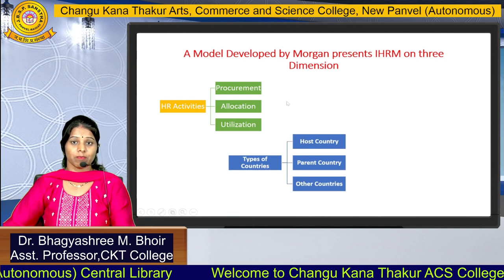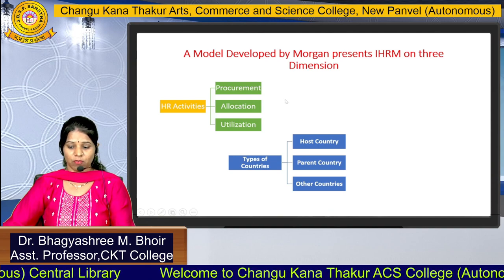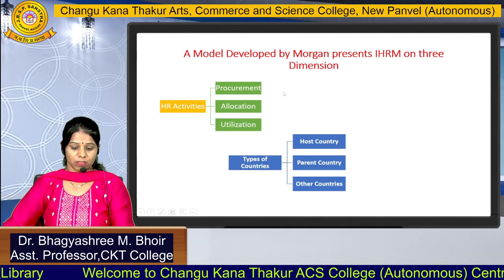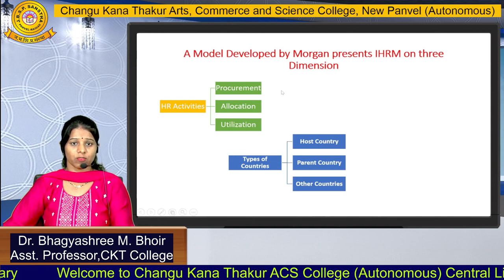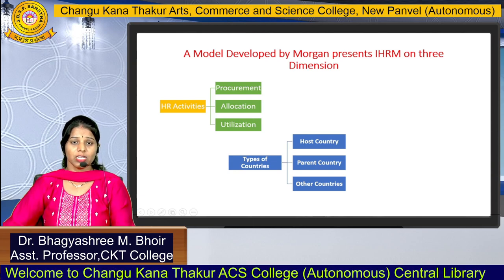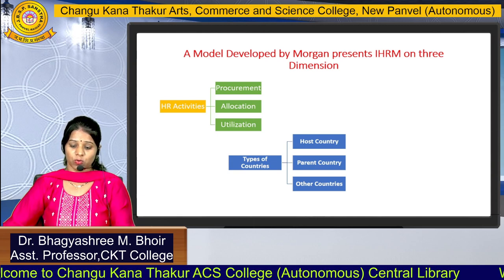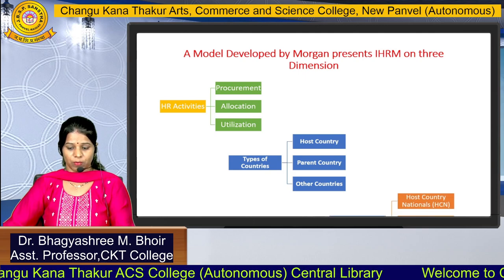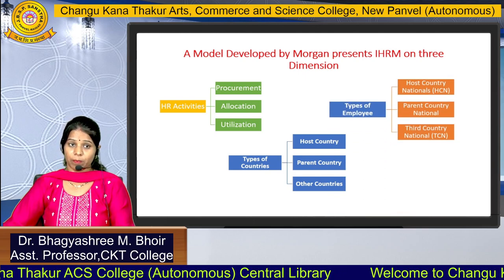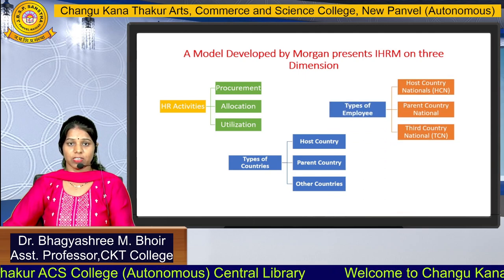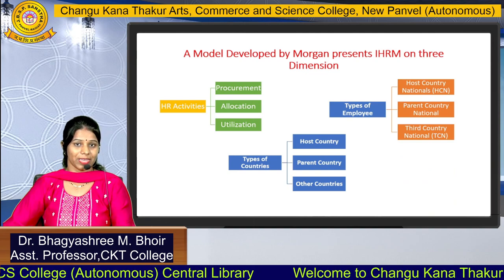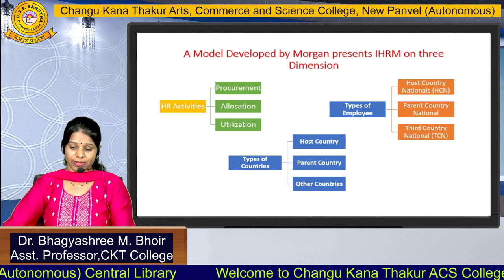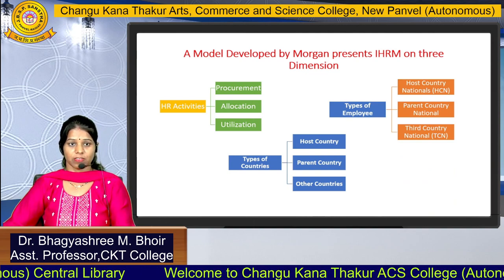The second dimension is the type of countries involved. These include the host country, parent country, and other countries. The third dimension is the type of employees involved in international human resource management, which includes host country nationals, parent country nationals, and third country nationals.